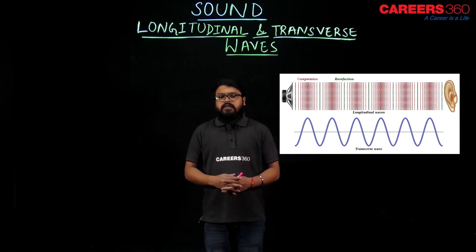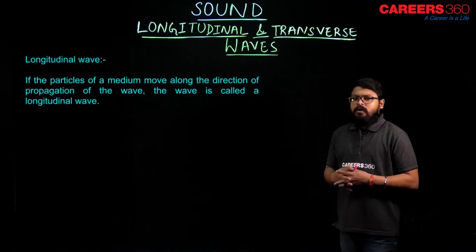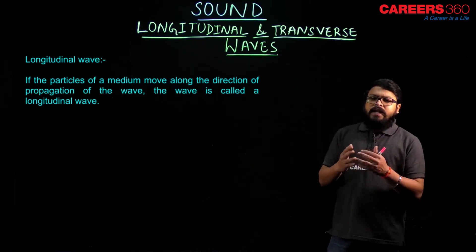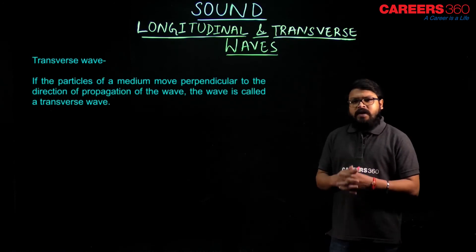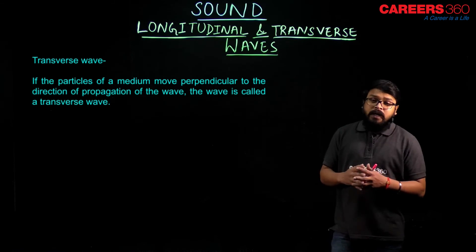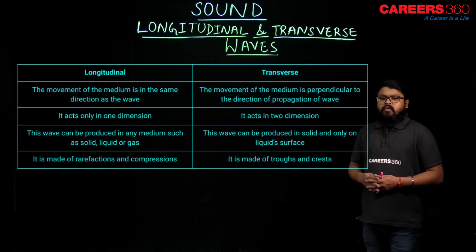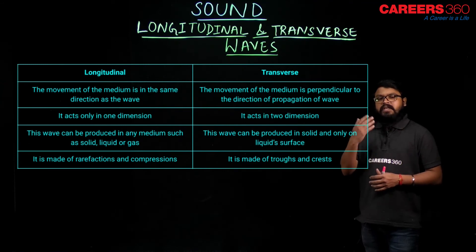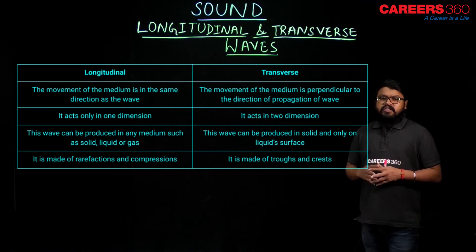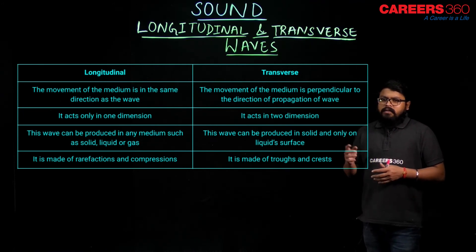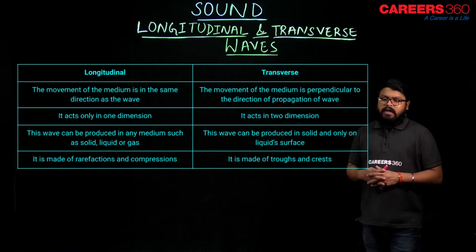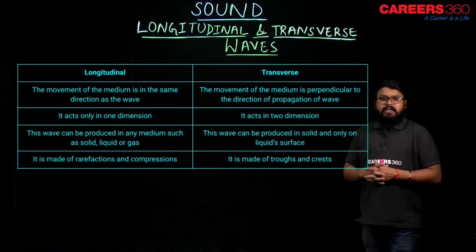Let us look at the formal definitions and differences. Longitudinal wave: if the particles of a medium move along the direction of propagation of the wave, it is called a longitudinal wave. Transverse wave: if the particles of a medium move perpendicular to the direction of propagation, it is called a transverse wave. The key difference: in longitudinal waves, the medium moves in the same direction as propagation; in transverse, it moves perpendicularly. Longitudinal waves act in one direction; transverse waves act in two dimensions. Longitudinal waves can be produced in solids, liquids, and gases, but transverse waves can only be produced in solids and on liquid surfaces — not in gases.